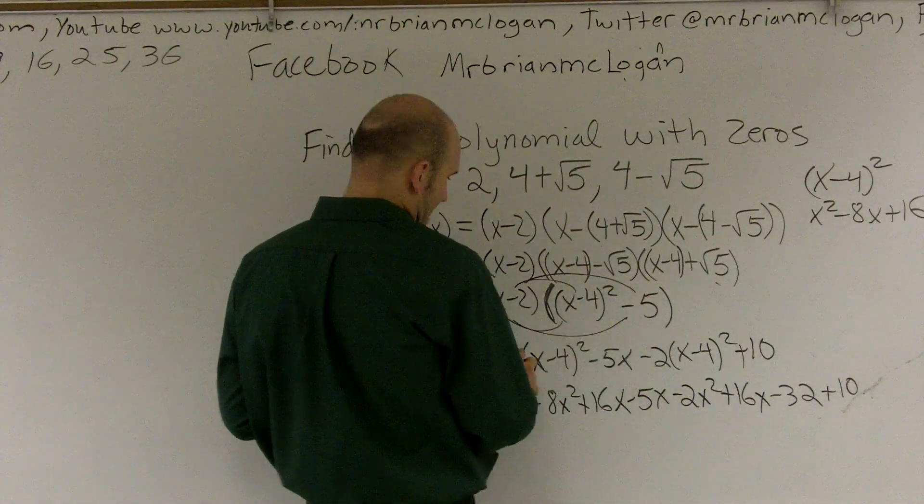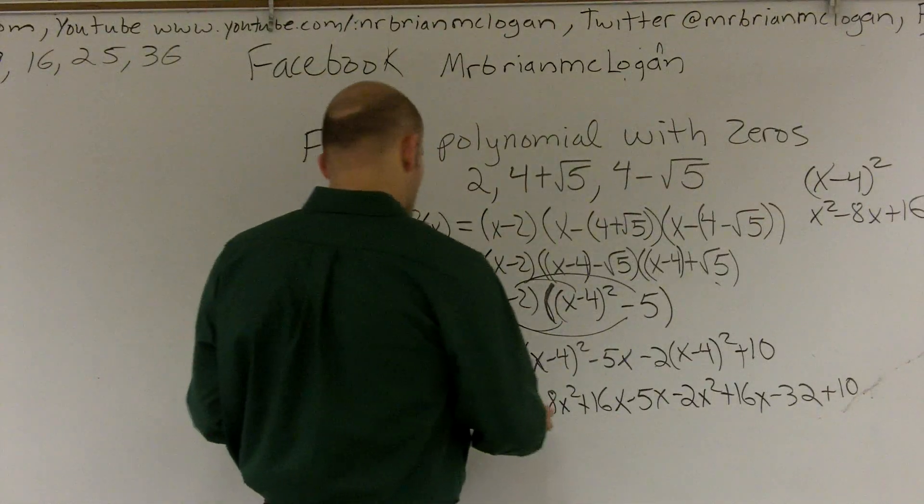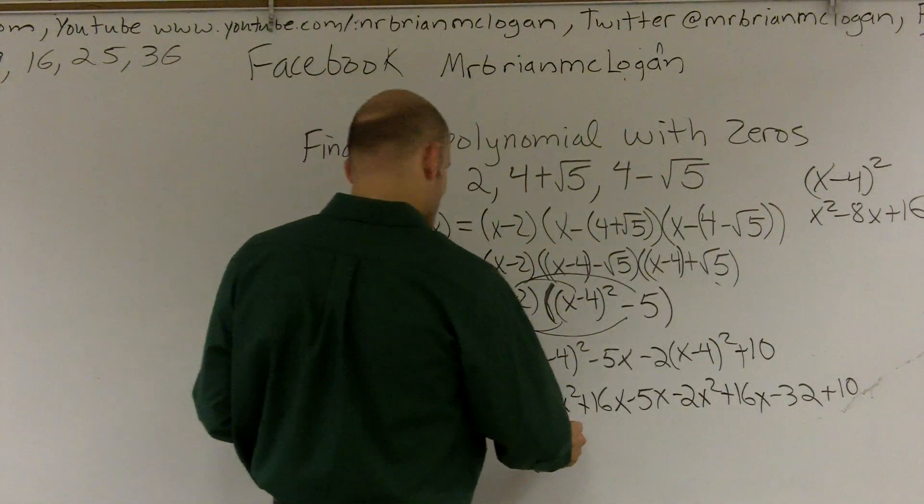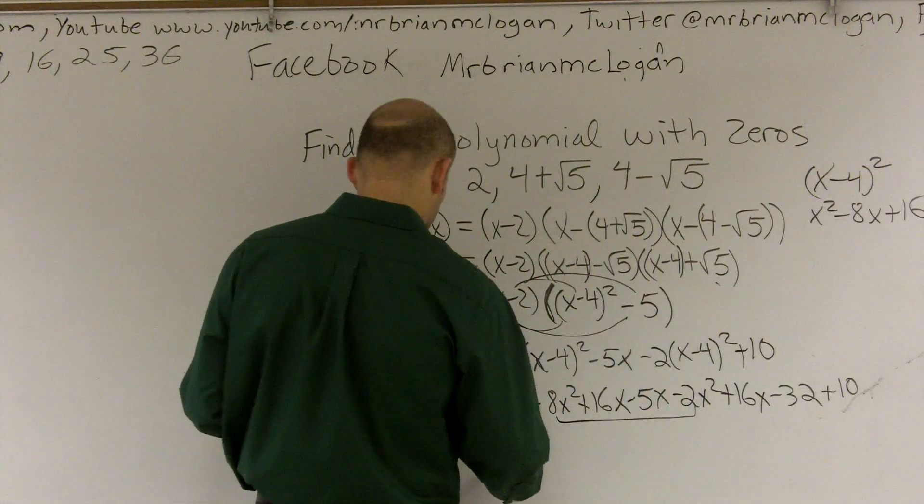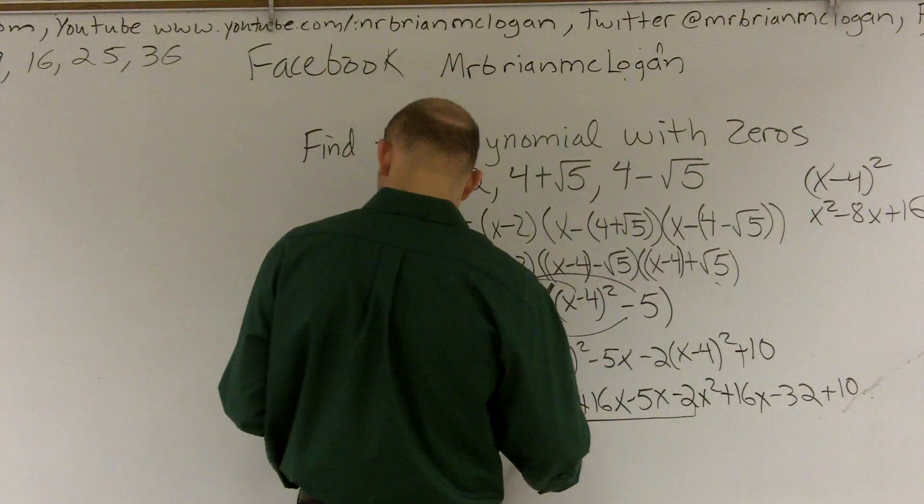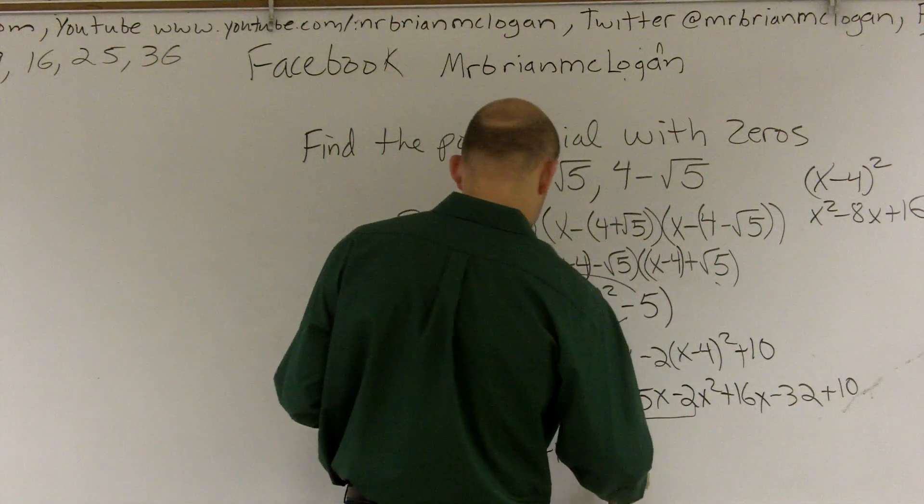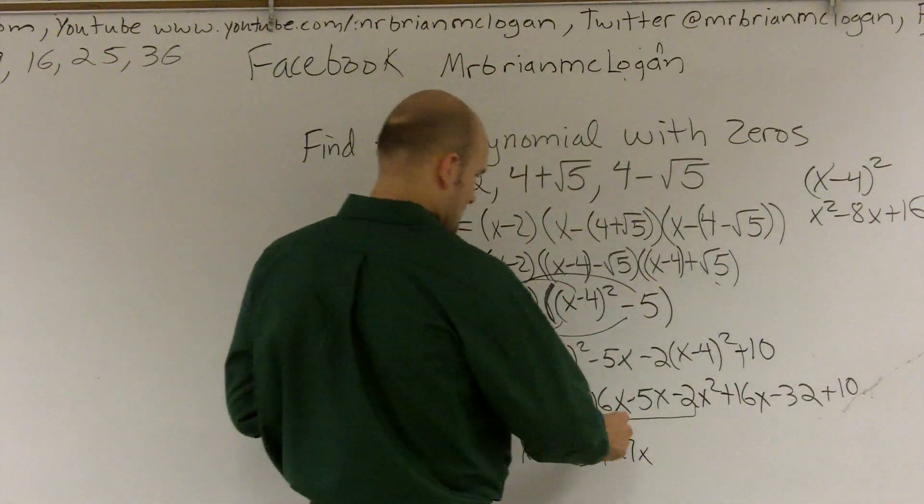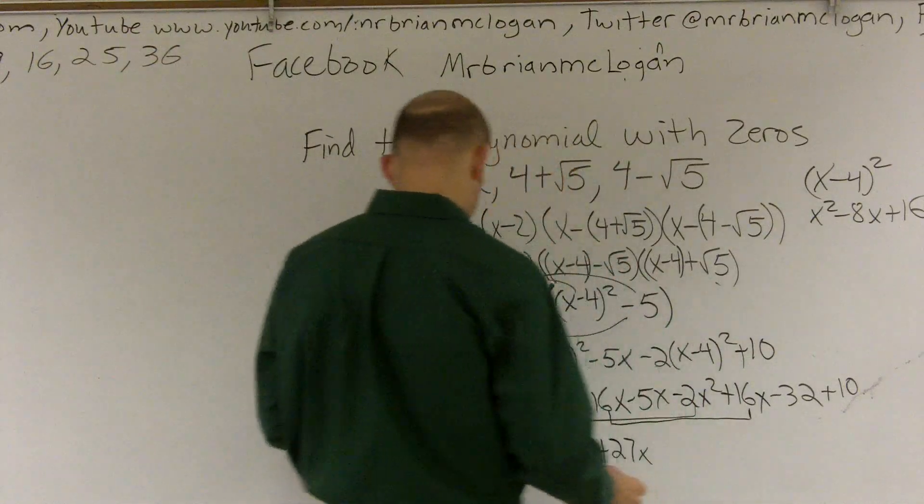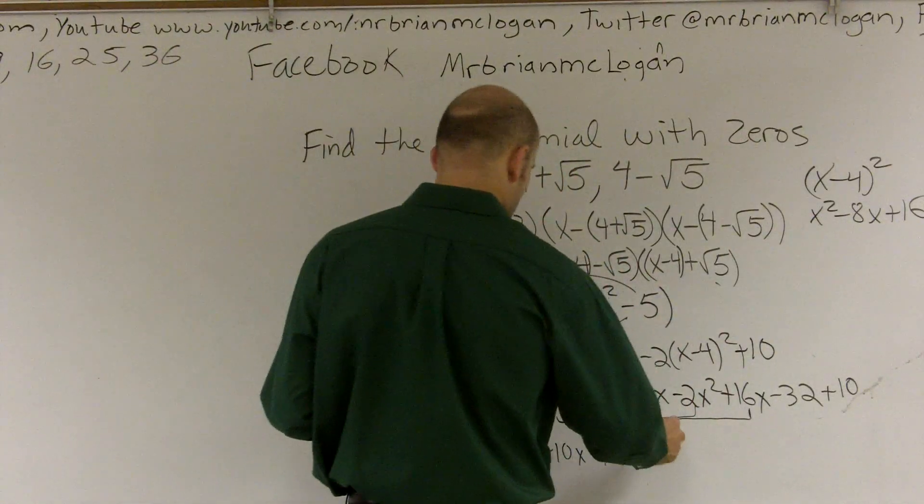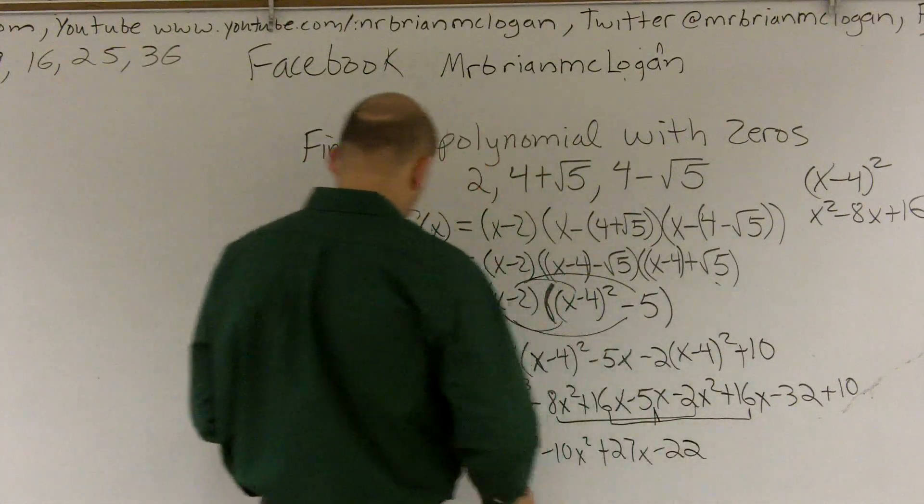Now let's just go ahead and combine our terms. x times x squared is x cubed. My apologies. So I can now combine my negative x squared, my negative 2x. So my final function is f of x equals x cubed minus 10x squared plus 27x, where do I get 27x? I combine 16x, 16x, and this negative 5x, minus 22. And that's going to be my function.